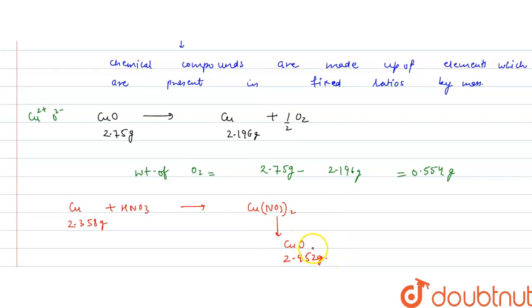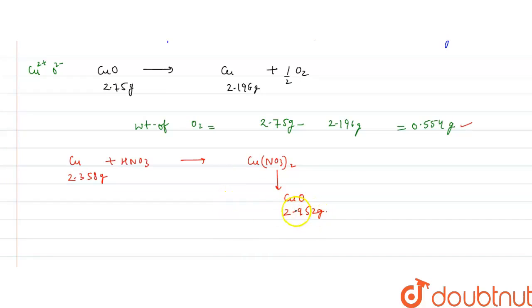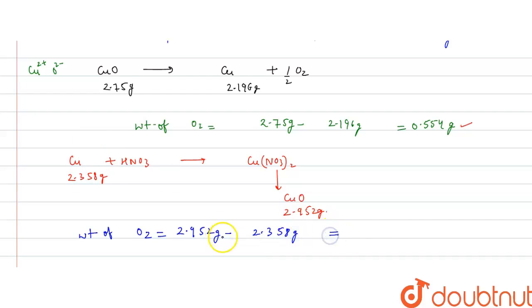To illustrate the law of constant composition, the weight of oxygen obtained in this method should also be the same. The weight of oxygen = weight of cupric oxide formed − weight of copper taken = 2.952 grams − 2.358 grams = 0.594 grams. This means the percentage composition and the ratio of oxygen present in cupric oxide is the same.